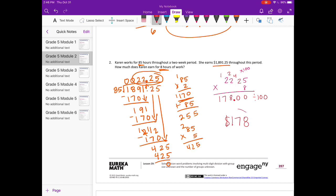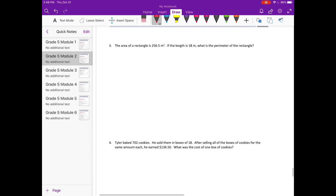Now we're going to divide by 100 to get $178. Number 3. The area of a rectangle is 256 and 5 tenths meters squared. If the length is 18 meters, what is the perimeter?